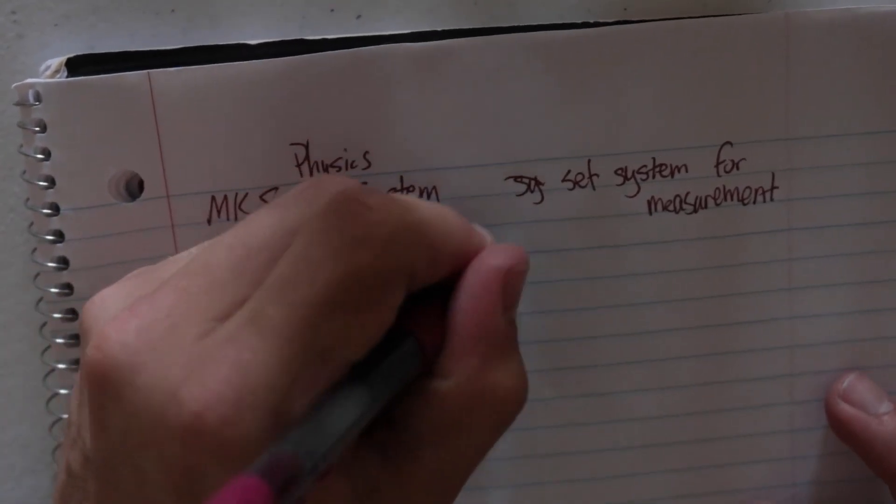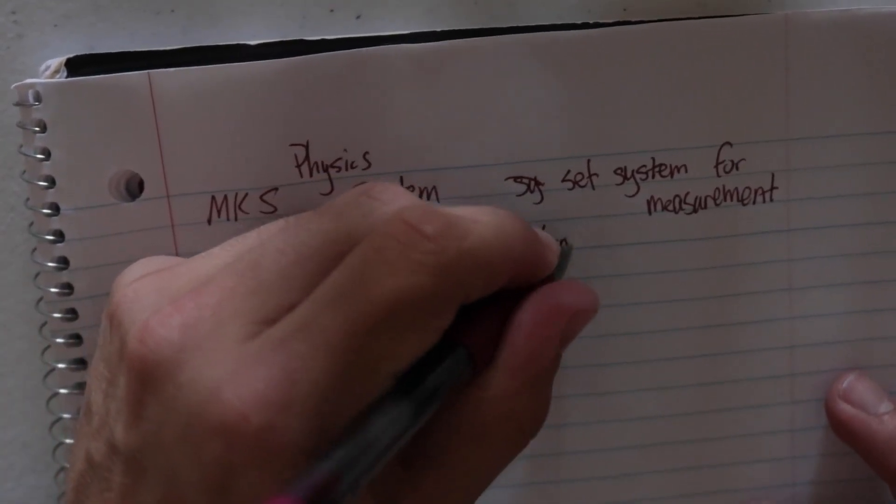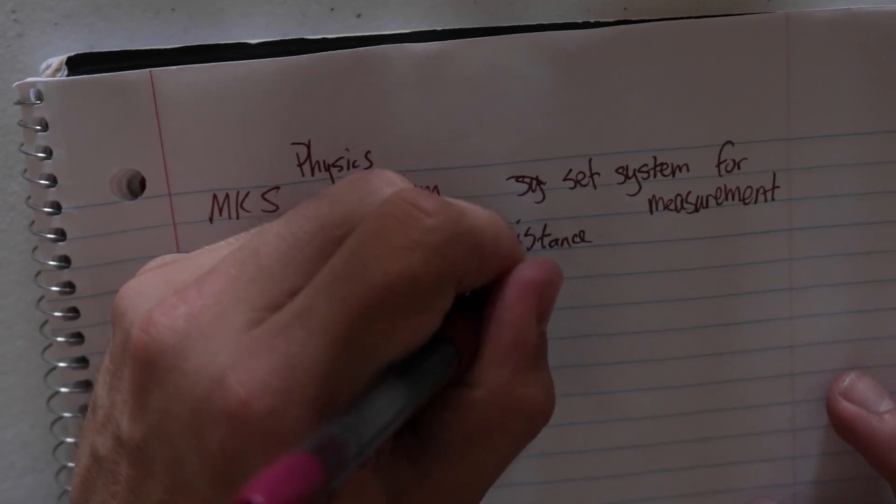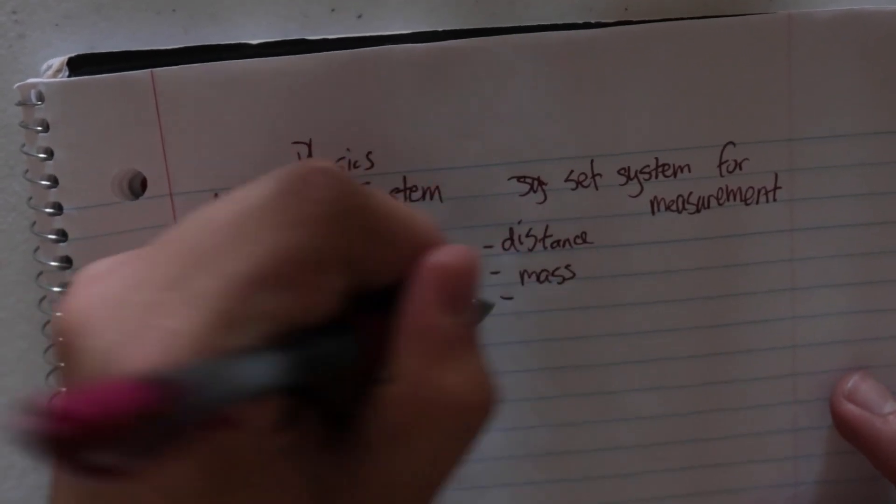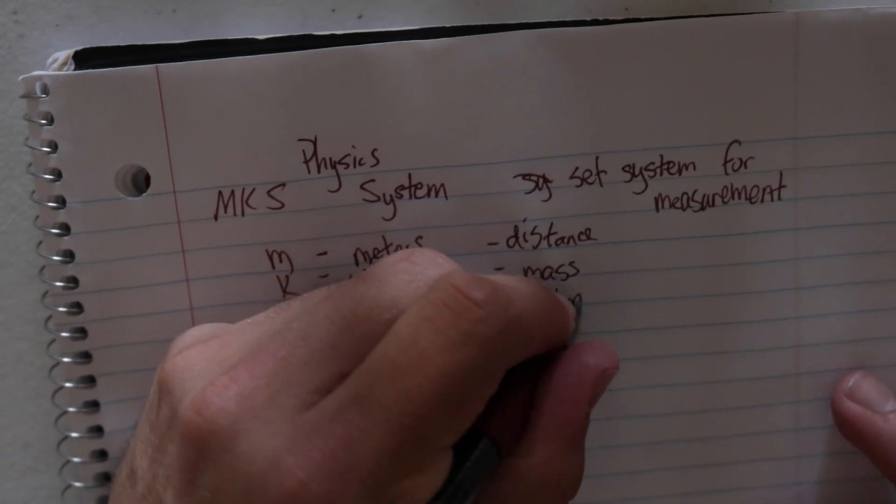And in the system, this is used for distance, this is used for mass, not weight, and then seconds is measuring time.